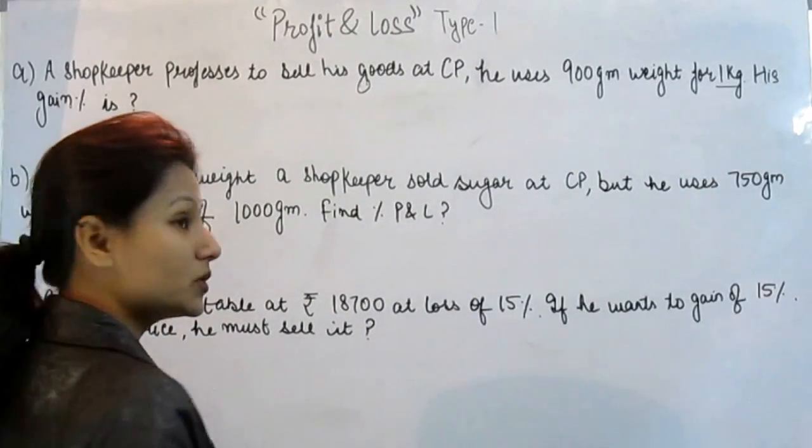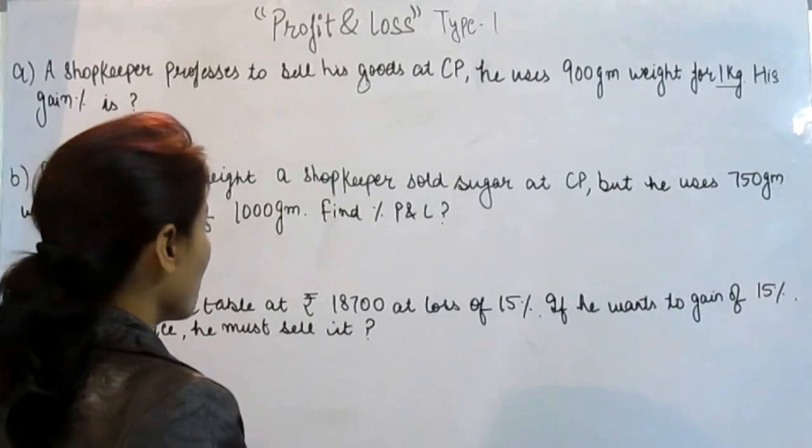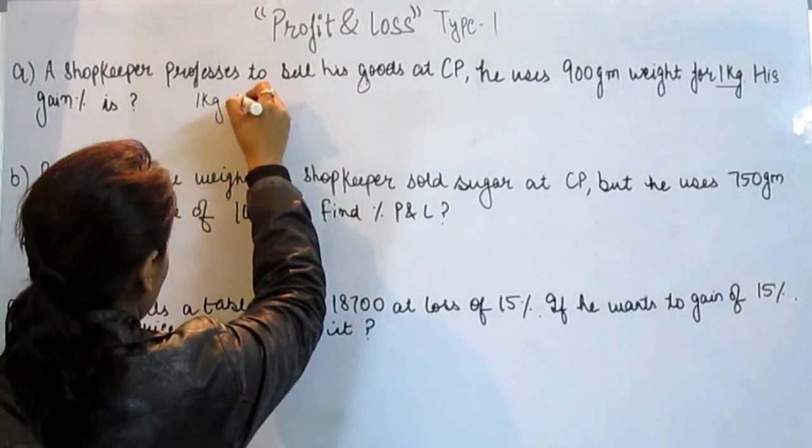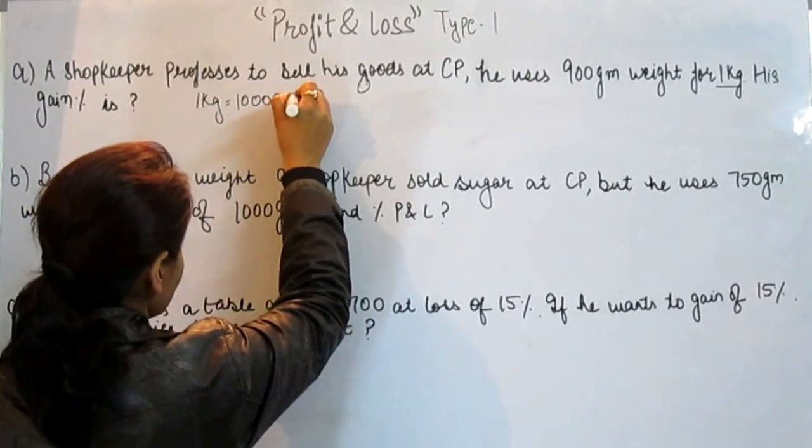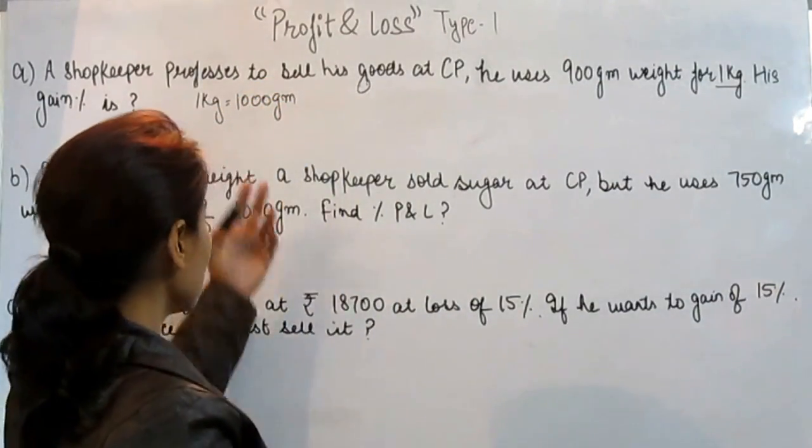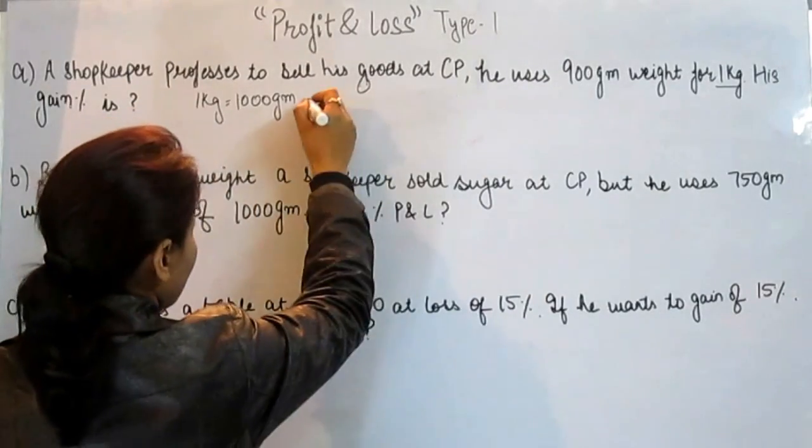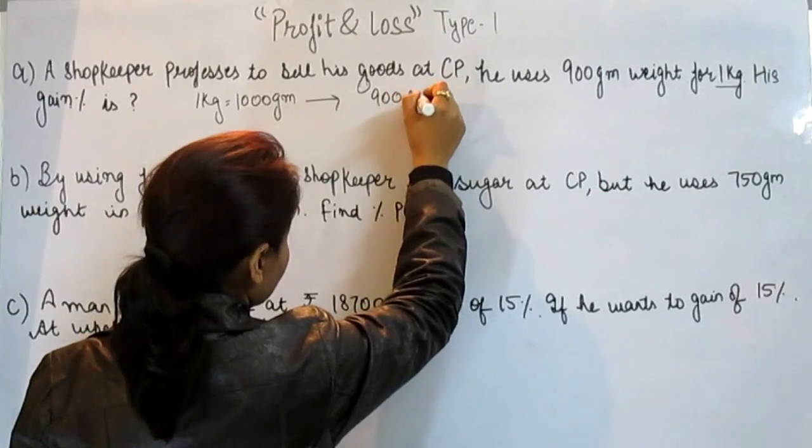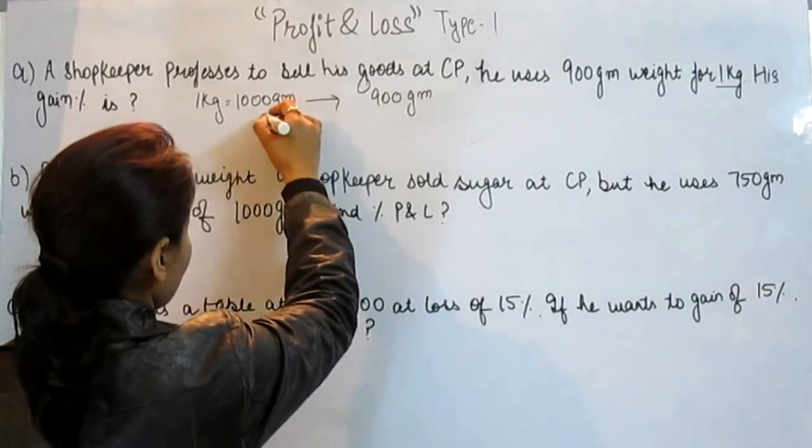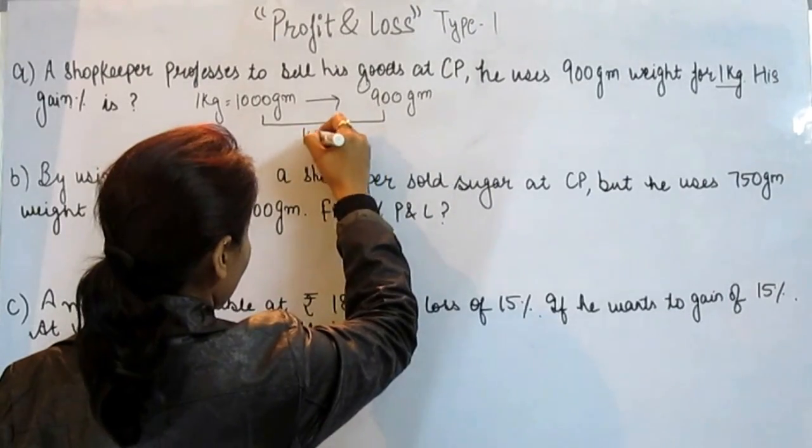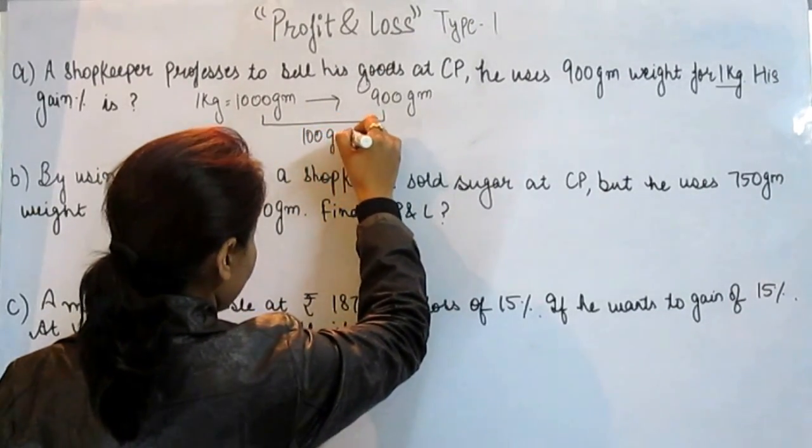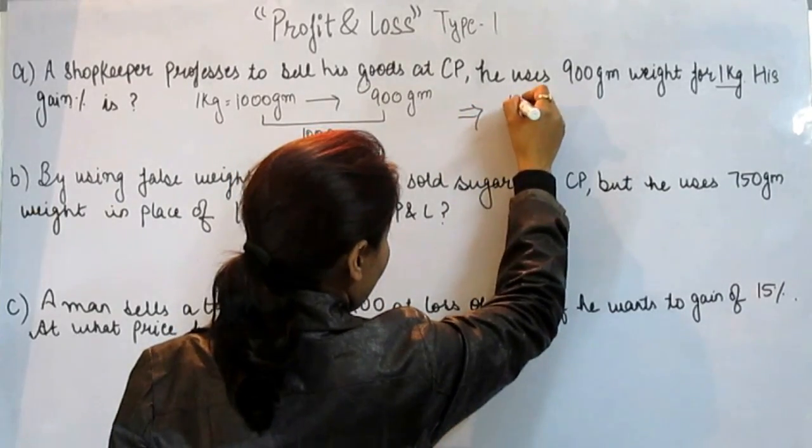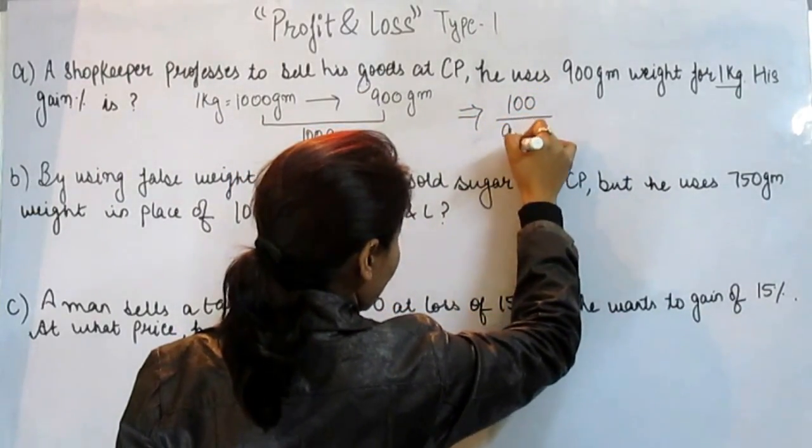His gain is possible. 1 kg equals 1000 grams, and in place of 1000 grams, he is giving only 900 grams. So his profit is 100 grams, right? 100 grams on 900.